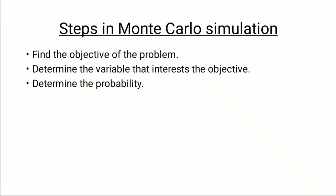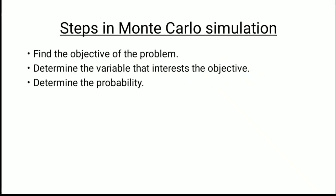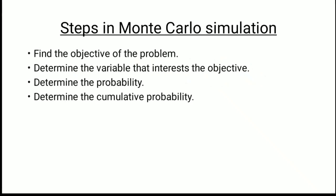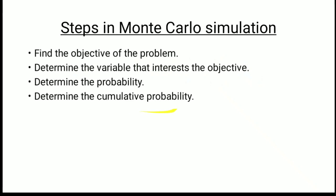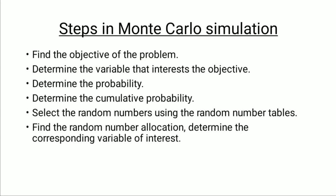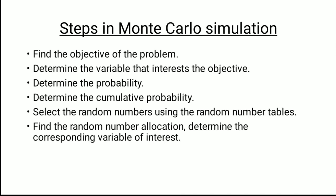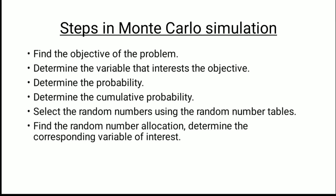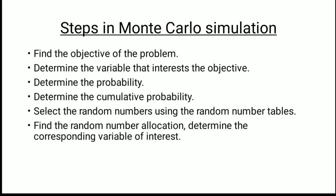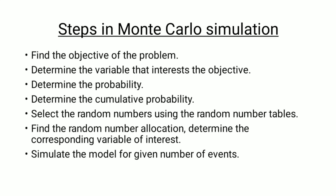The next step is to find the probability. The probability can be given directly in the problem, or if not given, we need to calculate it. After that, we find the cumulative probability. Then we select random numbers from random number tables or as given in the problem. Finally, we find the random number allocation using random number intervals, and determine the corresponding variable of interest — that is, the value of variables affecting our objective. We then simulate the model for the given number of events.